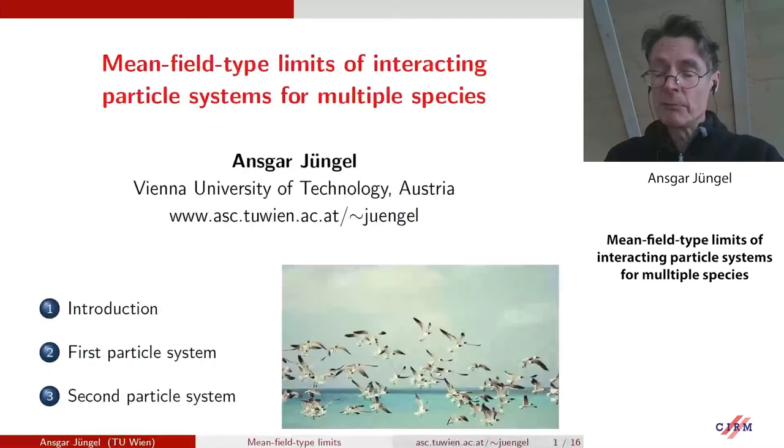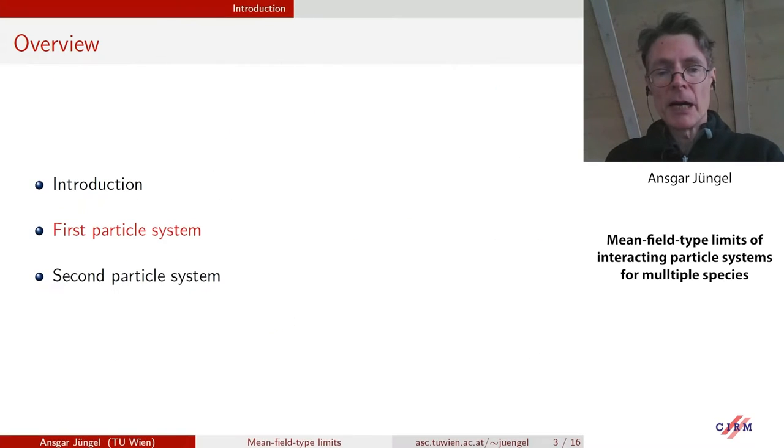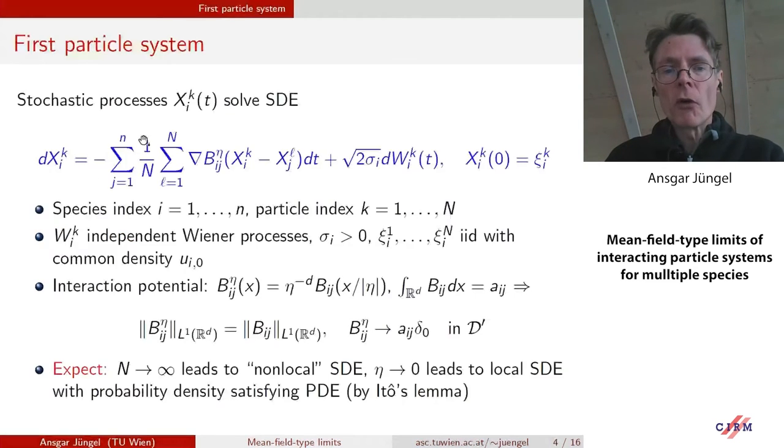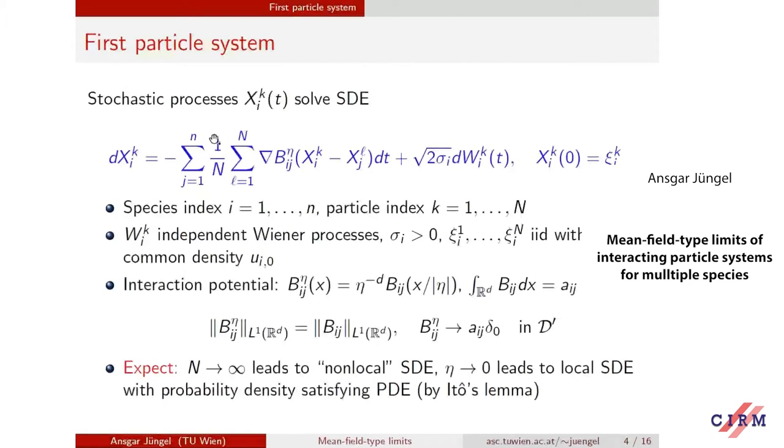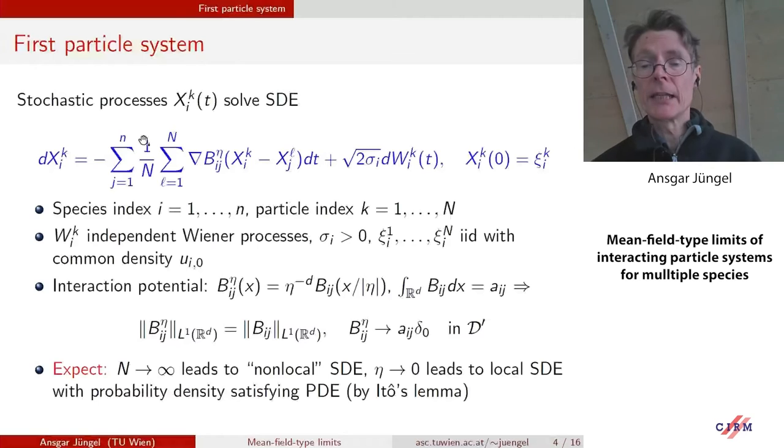I'm also interested in a local so-called localization limit. This means this B has an interaction radius epsilon which becomes smaller and finally converges to a diffusion. You will be able to get a quadratic-type degenerate parabolic equation. Now I'm interested in multiple species. Let me first consider a simple particle system, one here where in addition to the situation we had before, you also have the sum over all species.